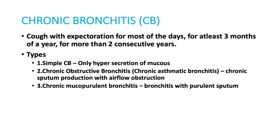Chronic bronchitis is one of the types of COPD. By definition, it is cough with expectoration for most days for at least three months of a year for more than two consecutive years. There are three important types: simple chronic bronchitis, chronic obstructive bronchitis, and chronic mucopurulent bronchitis. Simple chronic bronchitis means hypersecretion of mucus. Obstructive bronchitis means the patient can have sputum production and airflow obstruction. Chronic mucopurulent bronchitis means sputum with purulence.